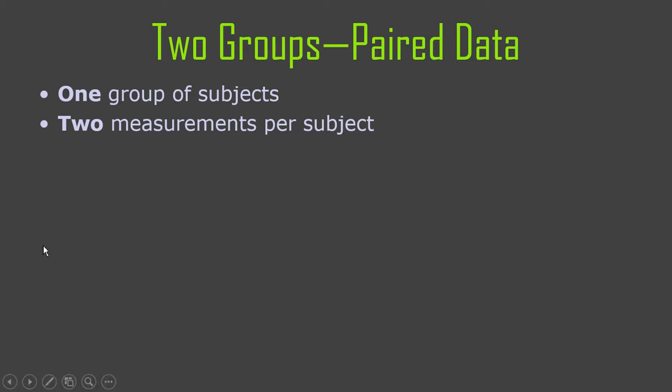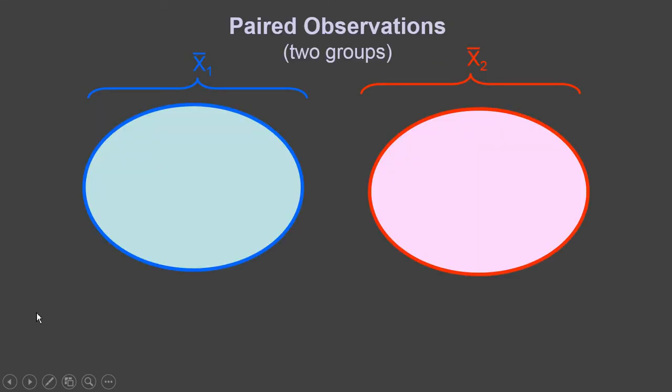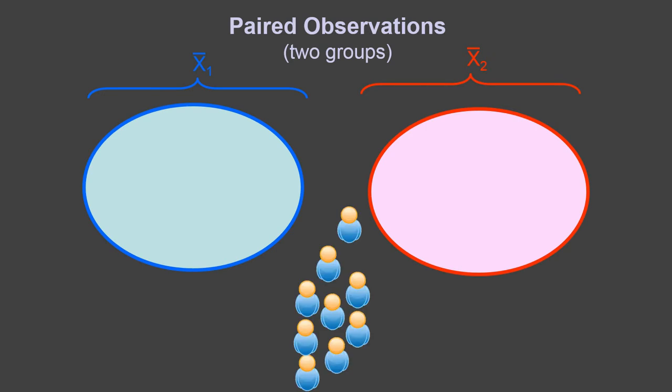So in this situation, you end up with two groups of observations, but only one group of cases or individuals. Or in the social sciences, that usually means people. So here's your group of cases or individuals or subjects. And let's say your dependent variable is history achievement scores. So maybe these are high school students and you're seeing how much they learned about history.